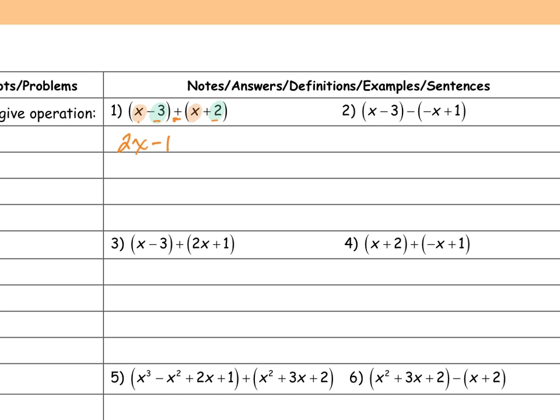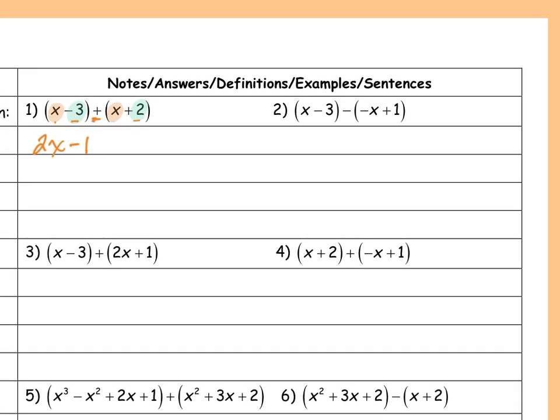For problem two, I'm going to do this one vertically. I have x minus 3, and then I distribute that negative through — it just changes my signs — so I get plus x minus 1. Adding them together: x plus x is 2x, and negative 3 minus 1 is negative 4.